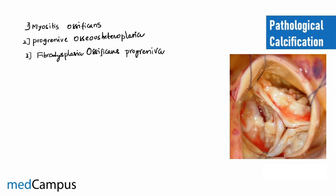In myositis ossificans, trauma induces calcium deposition inside tissues; it is most commonly seen after neurological disorders in bedridden patients with spinal cord injury or traumatic fractures treated by quacks. Progressive osseous heteroplasia is a congenital condition with skin calcification deposition. In fibrodysplasia ossificans progressiva, there is no trauma, yet fibrosis progressively leads to ossification.